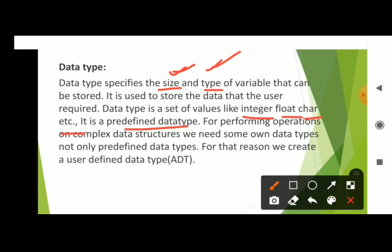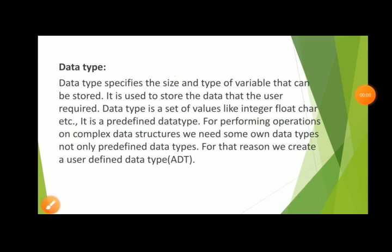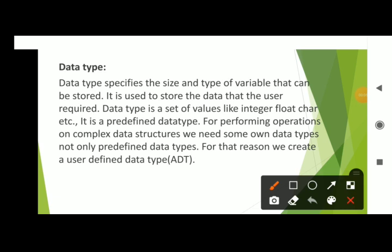If we take an int variable and declare one variable, we can accept only a single value. Basic data types can accept only single values. For performing operations on complex data structures, we need some user-defined data types, not only predefined data types. For that reason, we create user-defined data types — it is nothing but ADT.